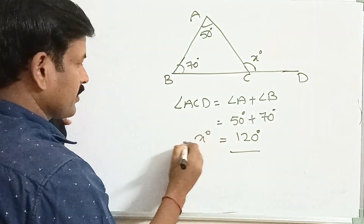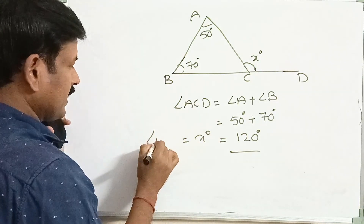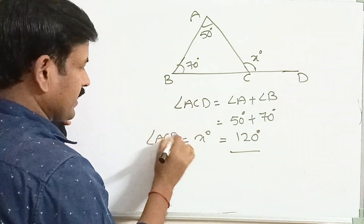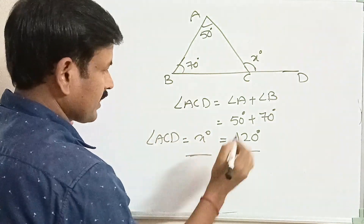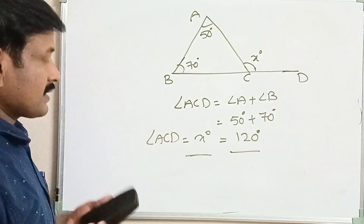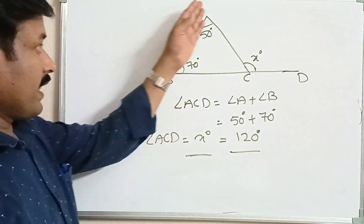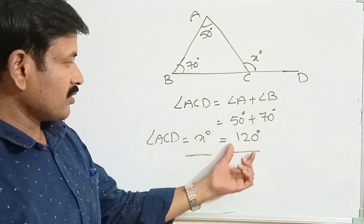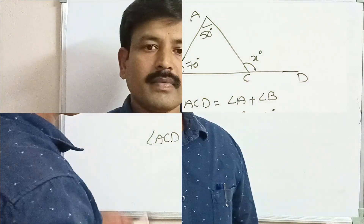Here, x degrees equals exterior angle ACD. The exterior angle ACD is equal to 120 degrees.